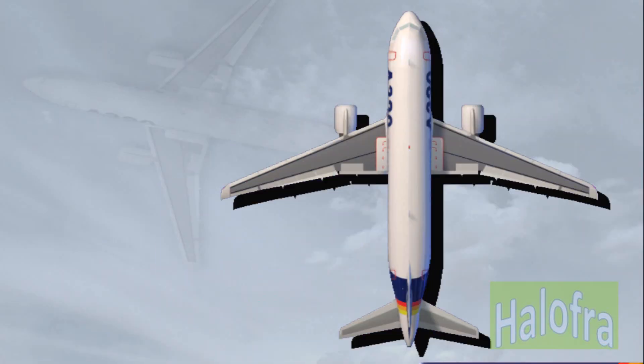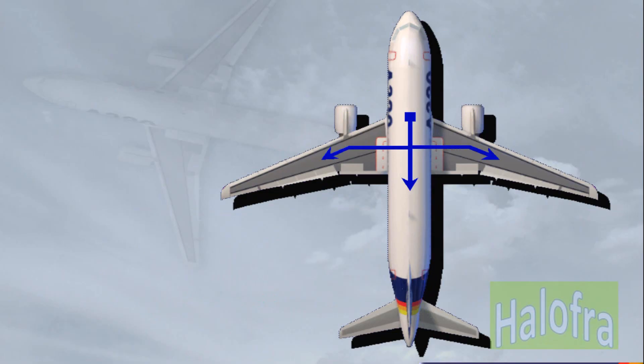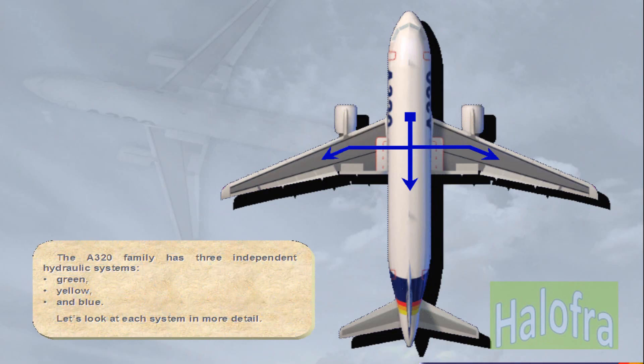The A320 family has three independent hydraulic systems: green, yellow, and blue. Let's look at each system in more detail.